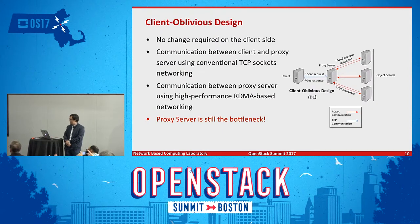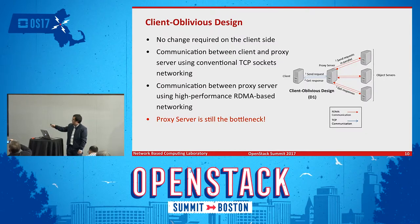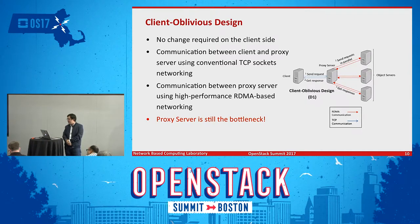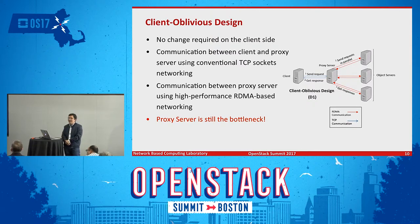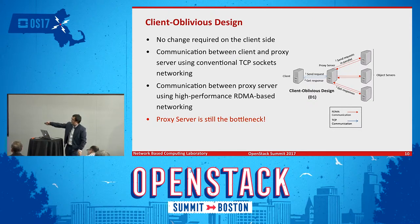Let's look at the first design — the client oblivious design. There is no change required on the client side. The blue lines represent the default path, which still goes through TCP/IP. The red lines represent the communication path between the proxy server and the object storage servers, where we change to RDMA-based communication protocol. Even though we improved the back-end data access through RDMA, the proxy server part — the blue lines — is still a bottleneck.